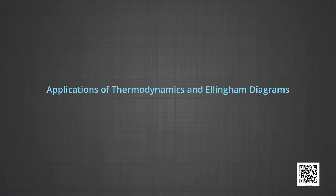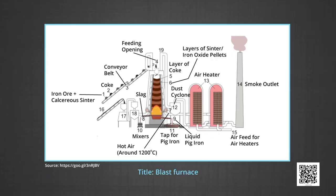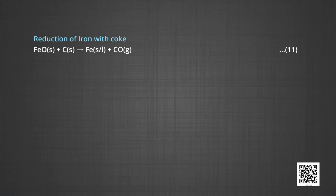Let us see the applications of thermodynamics and Ellingham diagrams in extraction of some metals. Extraction of iron from its oxides: oxide ores of iron, after concentration through calcination or roasting, are mixed with limestone and coke and fed into a blast furnace from its top, where the oxide is reduced to the metal. Thermodynamics helps us to understand how coke reduces the oxide and why this furnace is chosen. One of the main reduction steps is iron oxide reacting with coke to form iron plus carbon monoxide.